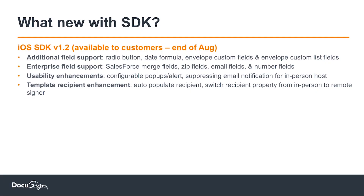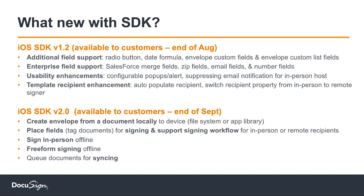What's upcoming for developers? We've made enhancements based on feedback: added additional tab support including radio buttons and date formula fields, and advanced recipient controls such as switching recipient type. Currently most SDK flows are template-driven, but in the next version — releasing end of next month — you'll be able to start document signing based on any document on the local device or cloud storage, not just a template.